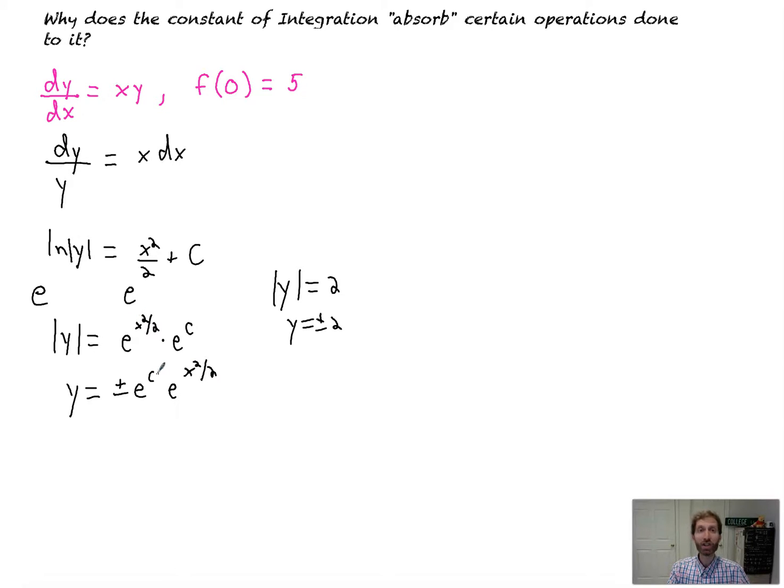Now when you go to actually solve this one out, there's a couple of reasons why things get absorbed. Number one, the plus or minus gets absorbed because you're going to determine what the plus or minus is based on the initial condition. It's got to be plus because we're going to get out a positive value of 5. But the initial condition would determine that for you anyway, so we don't need the plus or minus. Because whether we leave it in there or not, when we go to plug in (0, 5), it's automatically going to be a positive number. If it was a negative number, it would automatically be negative. So that's the reason why we don't need the plus or minus.